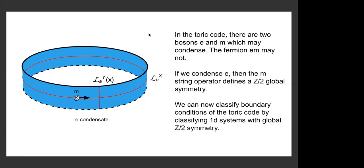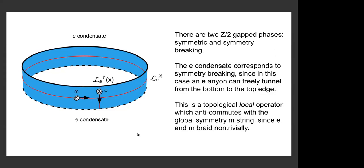In the toric code — probably the simplest topological order — there are two bosons, E and M, which are allowed to condense, and a fermion which is not. Let's take the reference boundary condition to be the E condensate. In this case, the M closed string defines a nontrivial operator because M cannot end on the E condensate since M braids with E. Because of the fusion rule M-squared equals one, this defines a Z2 global symmetry. So boundary conditions of the toric code, once you choose this reference boundary condition, are in one-to-one correspondence with 1D systems with just a global Z2 symmetry. To study gapped boundary conditions, we study Z2 gapped phases — and there are two.